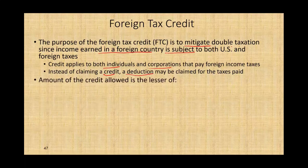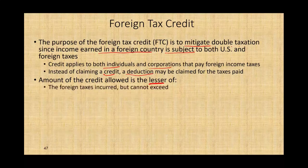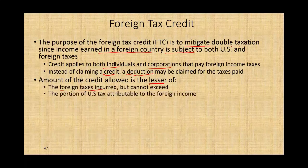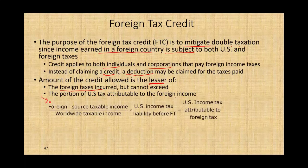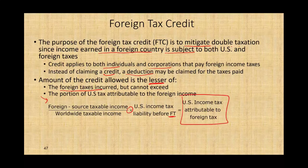How much is the credit? The credit is allowed for the lesser of two figures: what you paid, but what you paid cannot exceed the portion of U.S. tax attributable to the foreign income. We compare what you paid against what you would have owed in the U.S. on that income. If you paid more taxes abroad, you won't get credit for the excess — it becomes unused credit. The formula is: foreign source taxable income divided by worldwide taxable income, multiplied by the U.S. income tax liability before the foreign tax credit. This gives you the U.S. tax attributable to the foreign income. We'll work an example to see how this works.